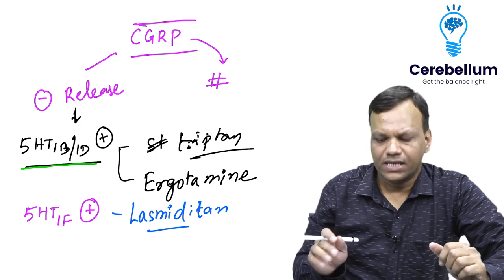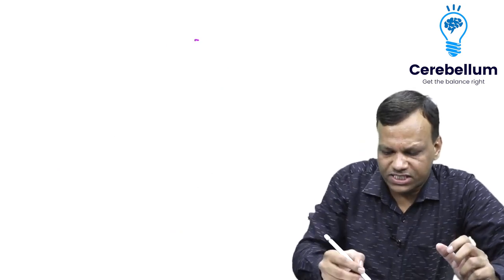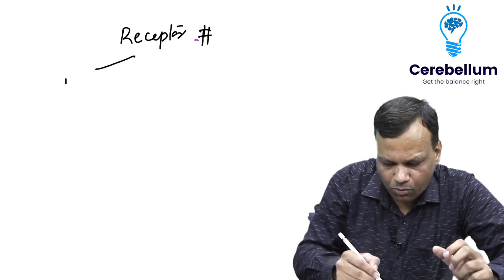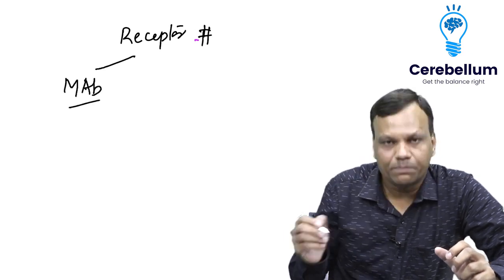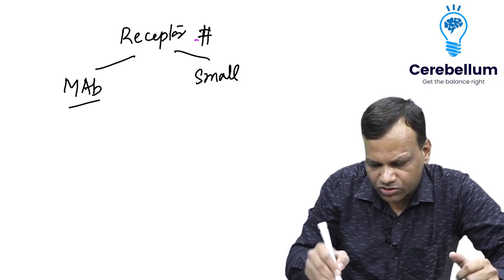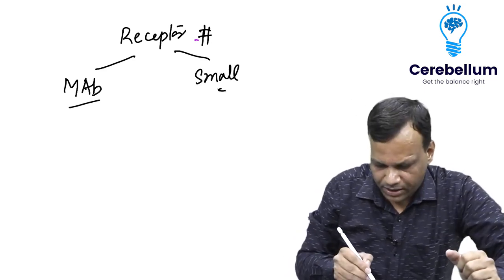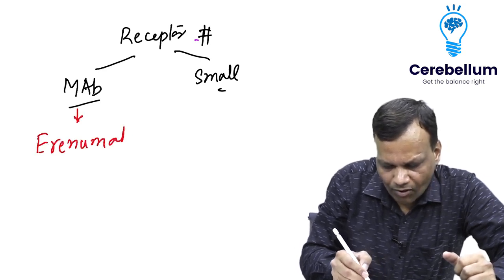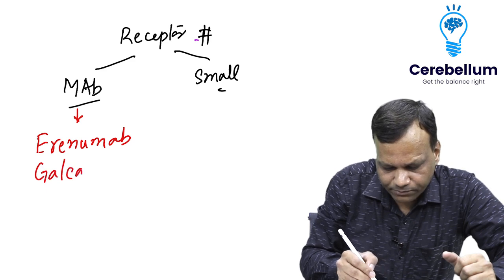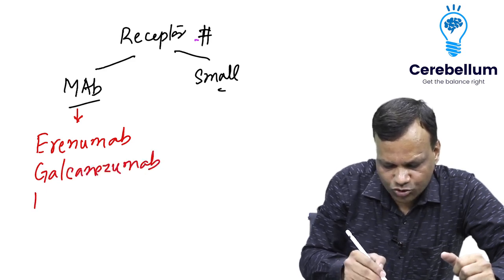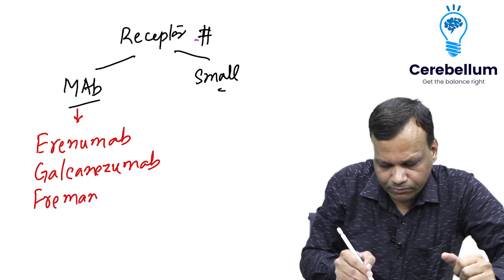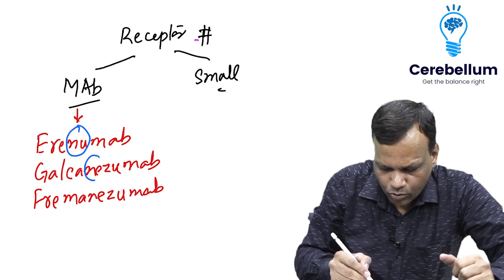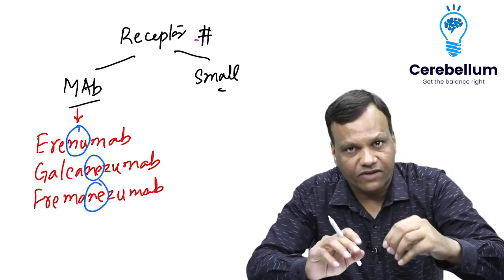Now coming to drugs which inhibit the action of CGRP, or CGRP receptor blockers. There are two types: one is monoclonal antibodies against CGRP, and second are small molecule inhibitors of CGRP receptors. The monoclonal antibodies include erenumab, galcanezumab, and fremanezumab. These are monoclonal antibodies and you can see all of them contain 'numab' or 'mab' in the name, which stands for monoclonal antibody.